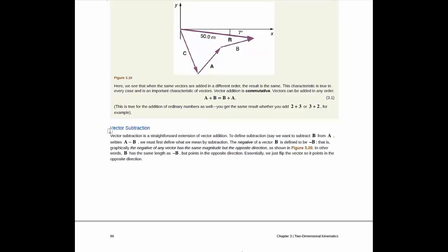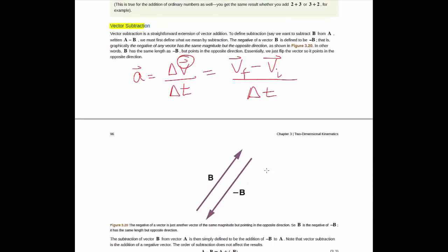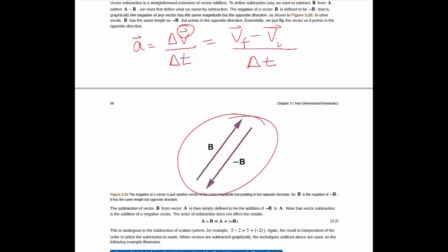You have some more examples, which are all beneficial. Then they get into the idea of vector subtraction, which is going to be important because you've seen that, for example, acceleration is the change in velocity over the change in time, and this thing's a vector. So you're looking at a vector subtraction in the definition of velocity. We need to make sure we understand vector subtraction. That's what begins here on the bottom of page 95.